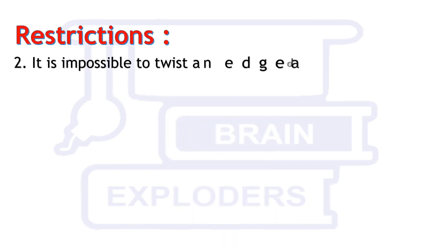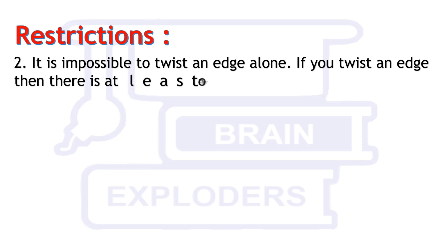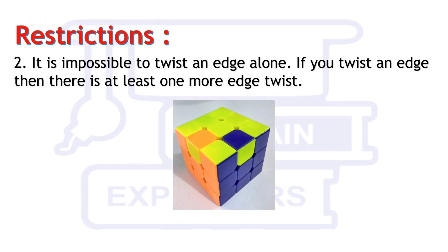Second restriction is that it is impossible to twist an edge alone. If you twist an edge, then there is at least one more edge twist. This is the example of this restriction. Here you can see that two pieces are twisted, and according to this restriction, either both of them get twisted or none of these get twisted.